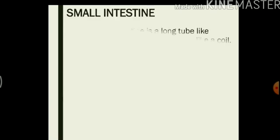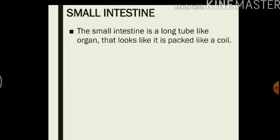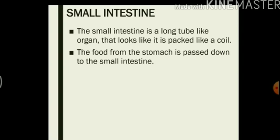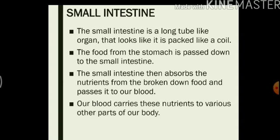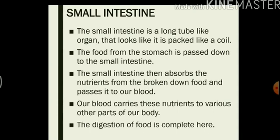After that, the small intestine is a long tube-like organ that looks like it is packed like a mosquito coil. The food from the stomach is passed down to the small intestine. The small intestine then absorbs the nutrients from the broken-down food and passes it to our blood. The blood then carries these nutrients to various other parts of the body. So the digestion of food is completed here in the small intestine.